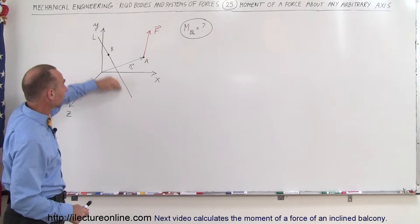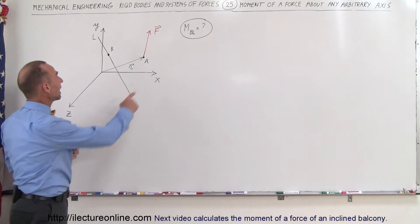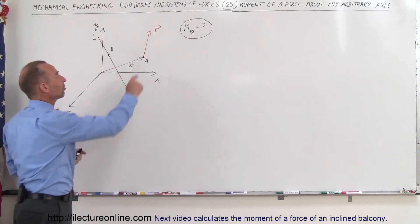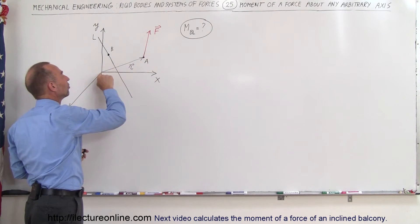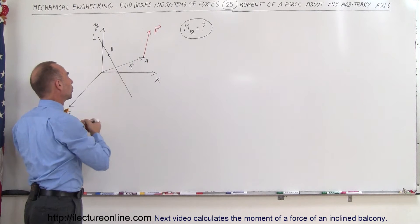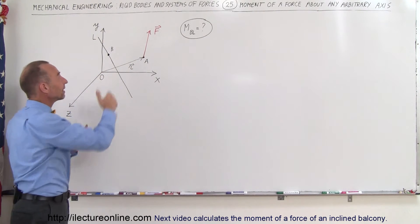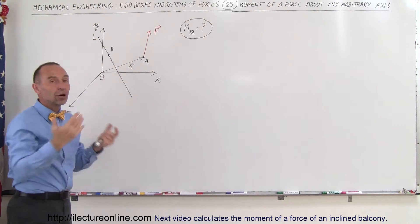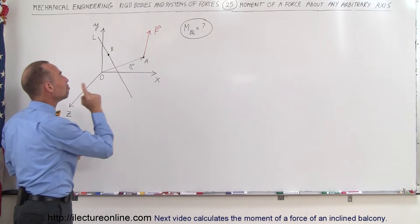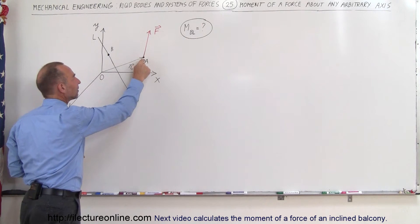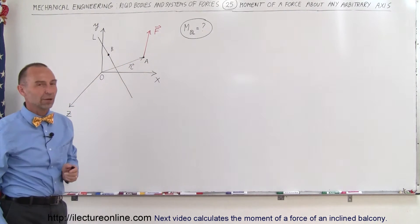Here's some arbitrary line in space. We have the X, Y, and Z axes. We have some point in space that is a distance R away from the origin. Here's the origin and there's some force acting on it in any arbitrary direction. What is the moment of this force acting at that point about this axis right here?